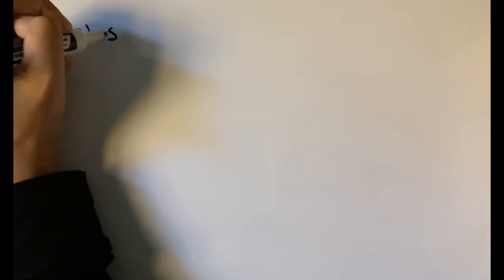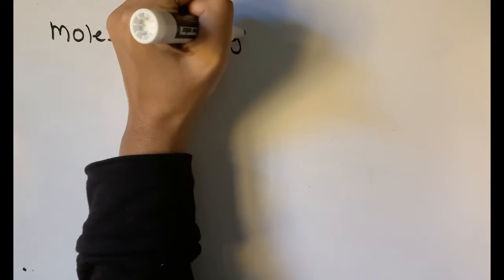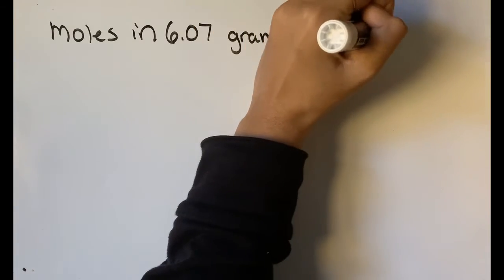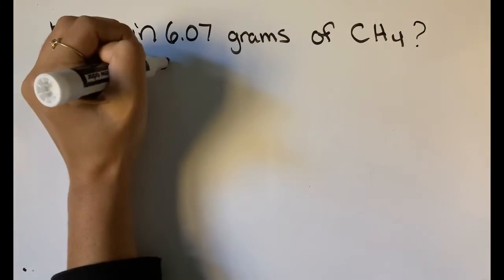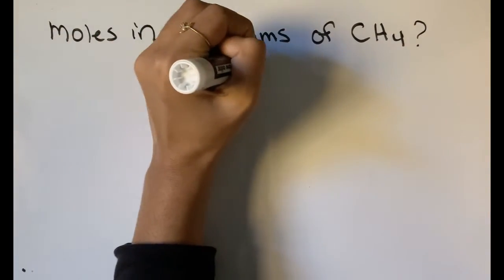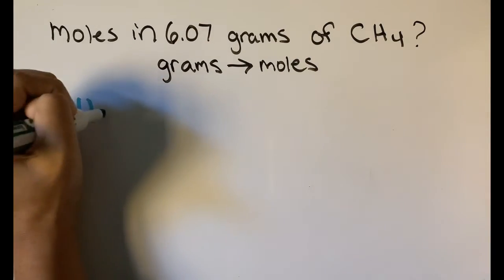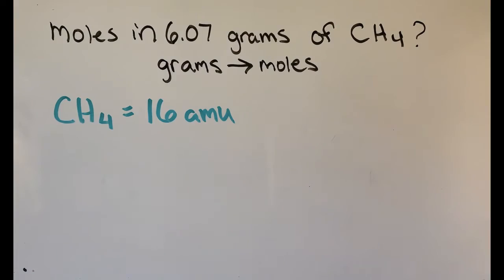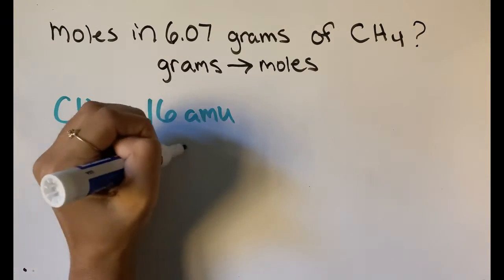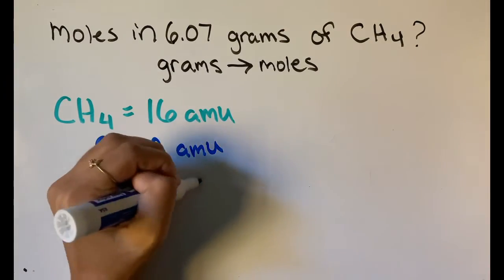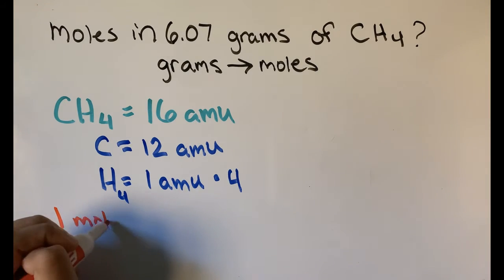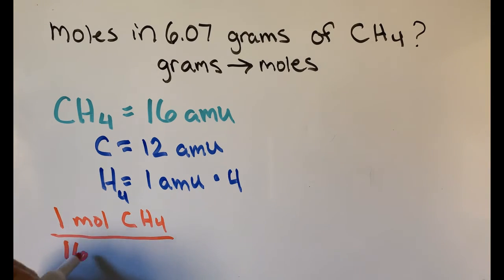Let's take this one step further. Say I want to find out how many moles are in 6.07 grams of CH4. Right now we have two different units, so let's find a way so that we can use grams to find moles. CH4 has a molecular mass of 16, since carbon is 12 amu and H is 1 amu each times 4 atoms. That means 1 mole of CH4 is equal to 16 grams.